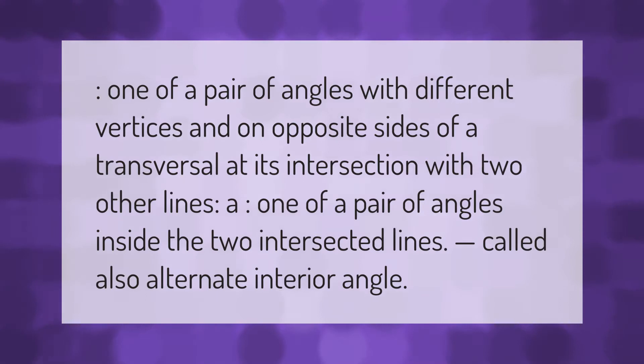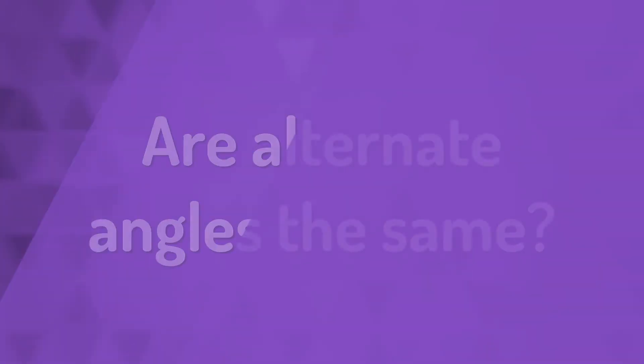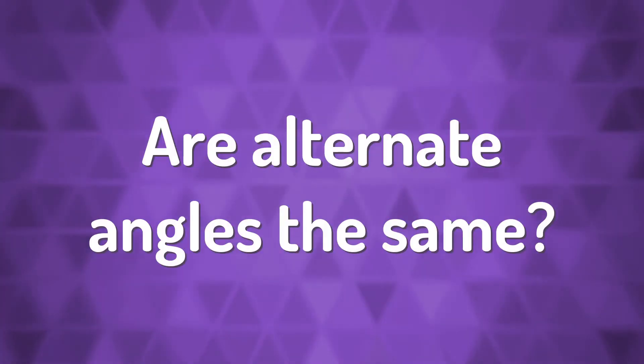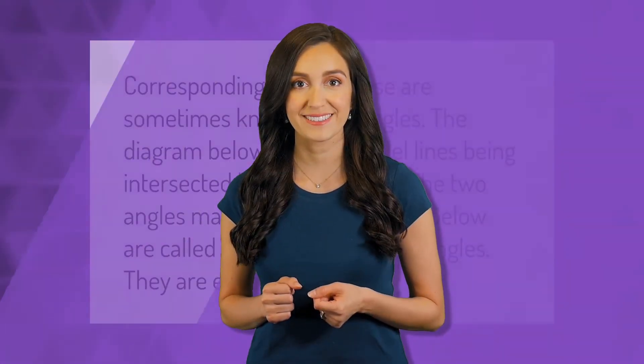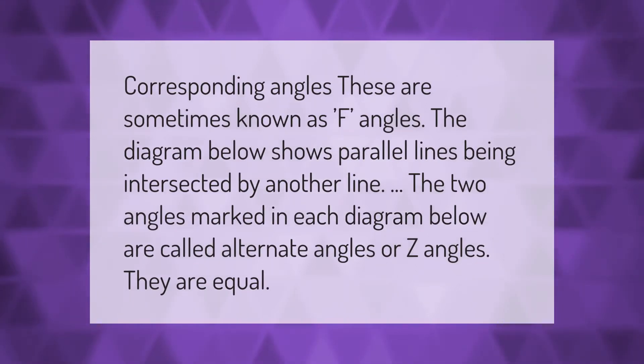Corresponding angles are sometimes known as F angles. The diagram below shows parallel lines being intersected by another line. The two angles marked in each diagram below are called alternate angles or Z angles. They are equal.